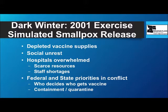The various governmental agencies had significant priority conflicts in terms of things like who decides the priority for vaccination, and what is the process for containment and quarantine.